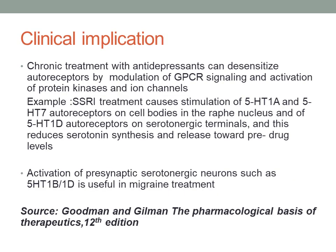What is the clinical implication of autoreceptors? Sometimes chronic treatment with antidepressants can desensitize autoreceptors by modulation of G-protein coupled signaling and activation of protein kinases and ion channels. For example, when we start treatment with SSRIs, it causes stimulation of 5-HT1A and 5-HT7 autoreceptors on cell bodies and the raphe nucleus, and of 5-HT1D autoreceptors on serotonergic nerve terminals, and this reduces serotonin synthesis and release towards pre-drug levels.